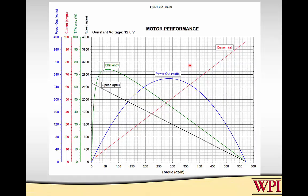Just to review a little bit from the motor videos: these are typical motor curves. Normally power, current, and efficiency are plotted versus torque or speed. If the horizontal axis is speed, then torque is on the vertical axis. The speed versus torque is just a linear relationship. Here's the no-load speed — for this motor, about 2,500 RPM.